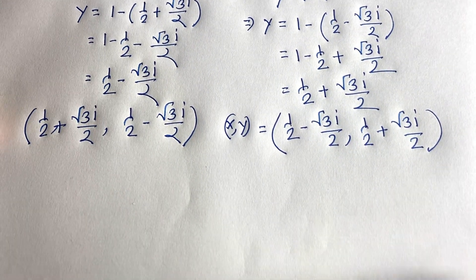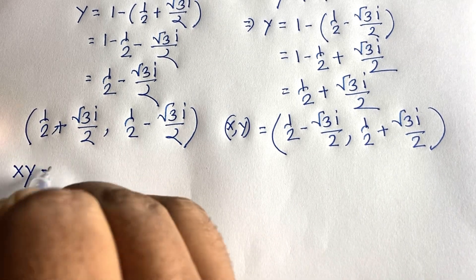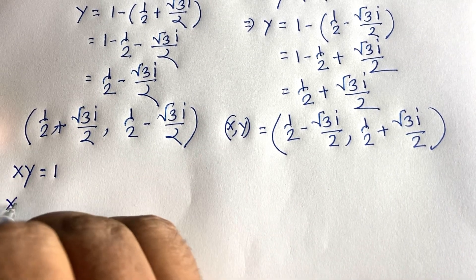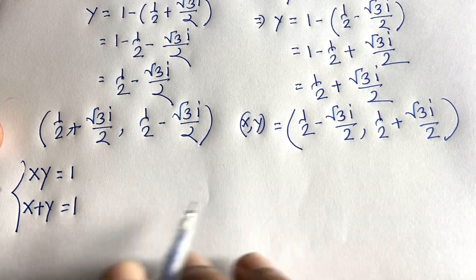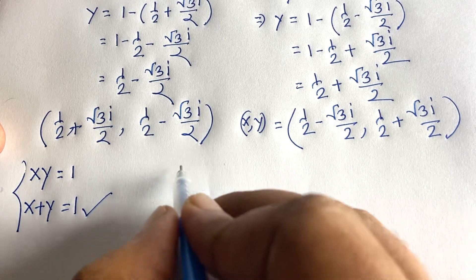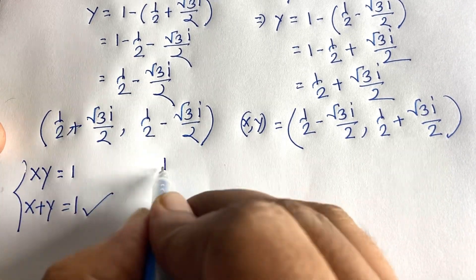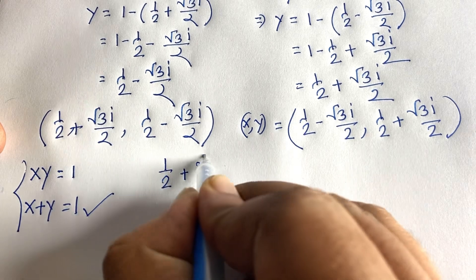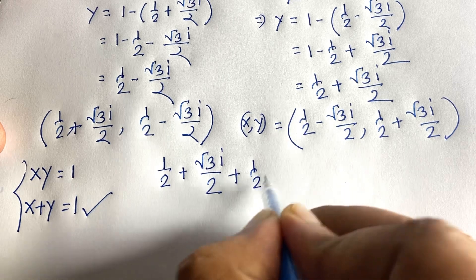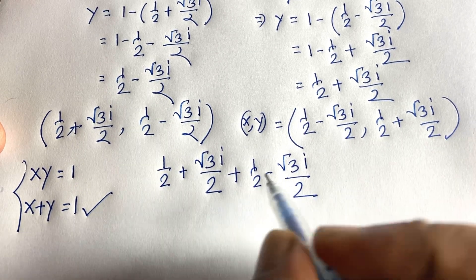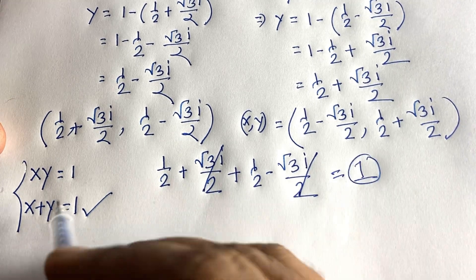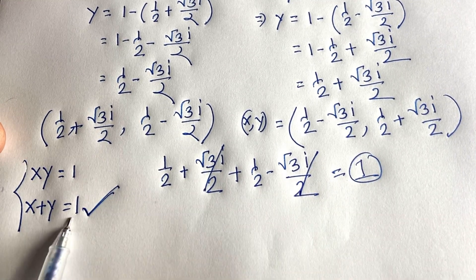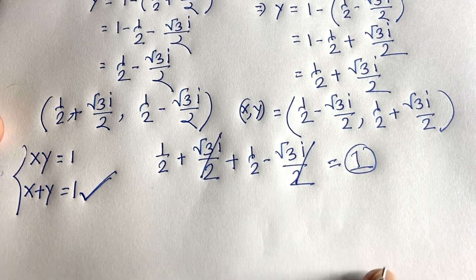Let's verify our answers. First, checking x plus y equals 1: taking x equals 1/2 plus (√3/2)·i and y equals 1/2 minus (√3/2)·i, the imaginary parts cancel and 1/2 plus 1/2 equals 1. So x plus y equals 1 is confirmed.